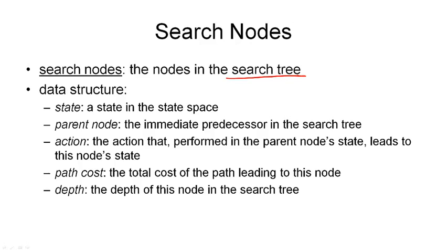Each search node consists of five things. The first is the state encapsulated in the search node — a state corresponds to a configuration of our world. Each node is a place in our search tree, and note that two search nodes may contain the same state. The next component is the parent node stored in each node, that is the immediate predecessor in the search tree. The only node that doesn't have a parent is, of course, the root node.